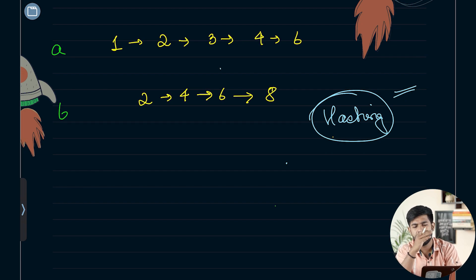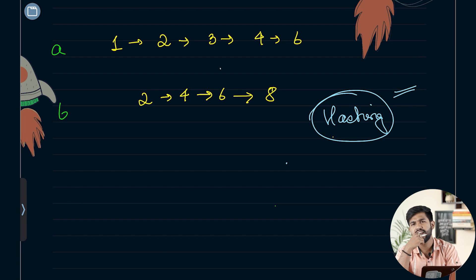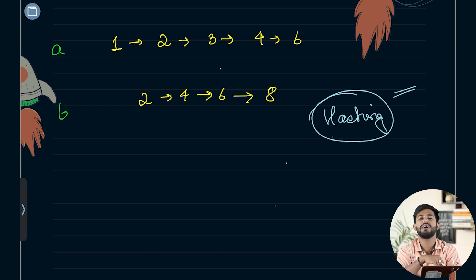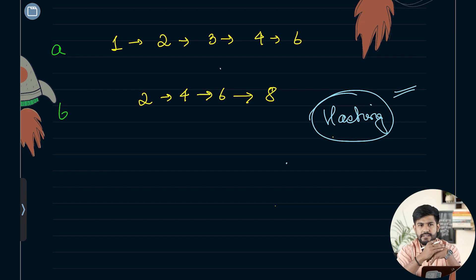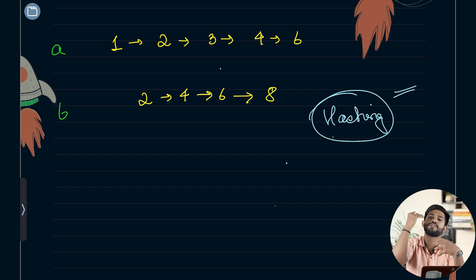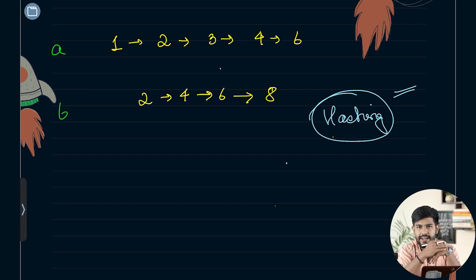The first approach is to hash all the values of the first linked list and then start traversing the second linked list. If any value was seen before, it contributes to the intersection linked list. This is the easier approach. But can you do it in just one traversal without any extra space — can you directly build the sorted intersection without hashing the values?